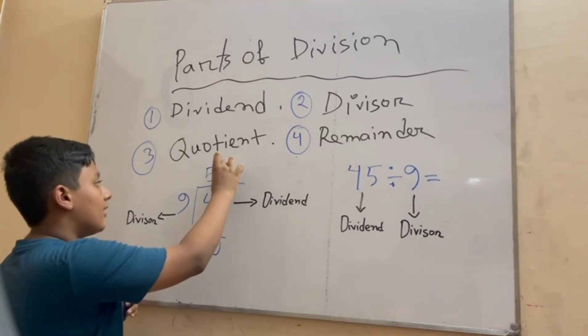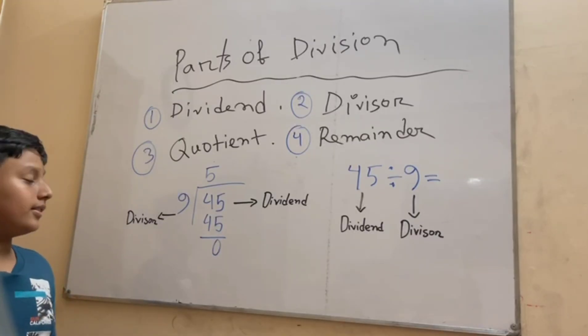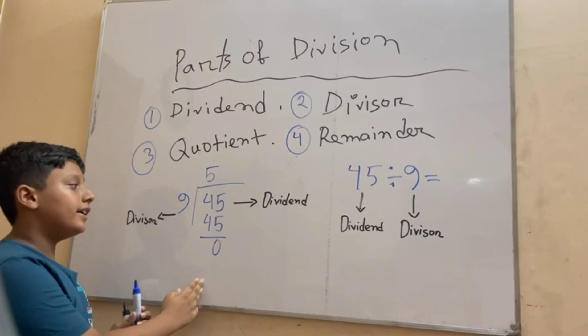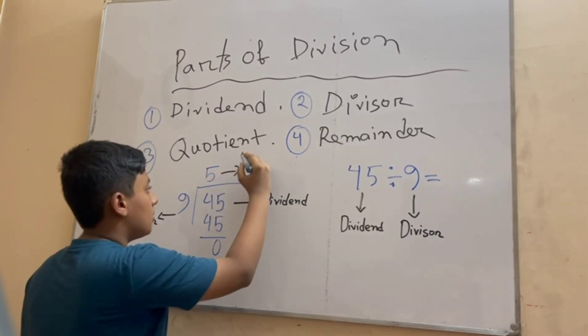Now here we got our answer, 5. Now what is 5? The 5 is the answer in this division and we call it as quotient.